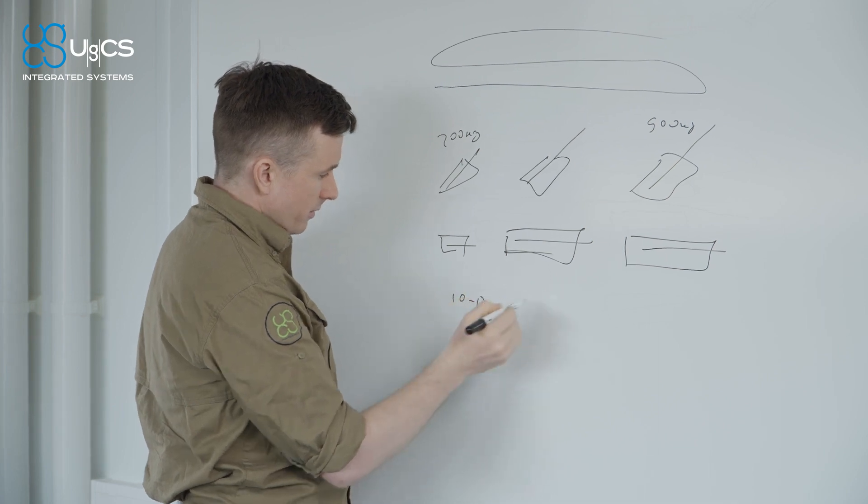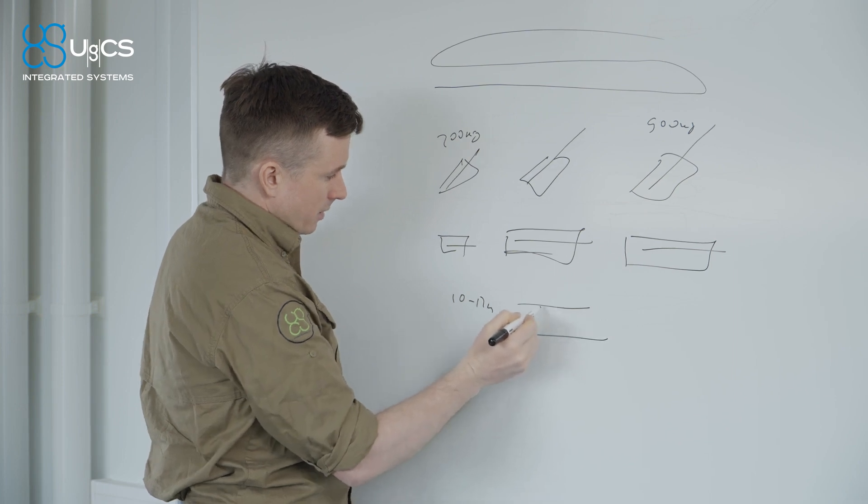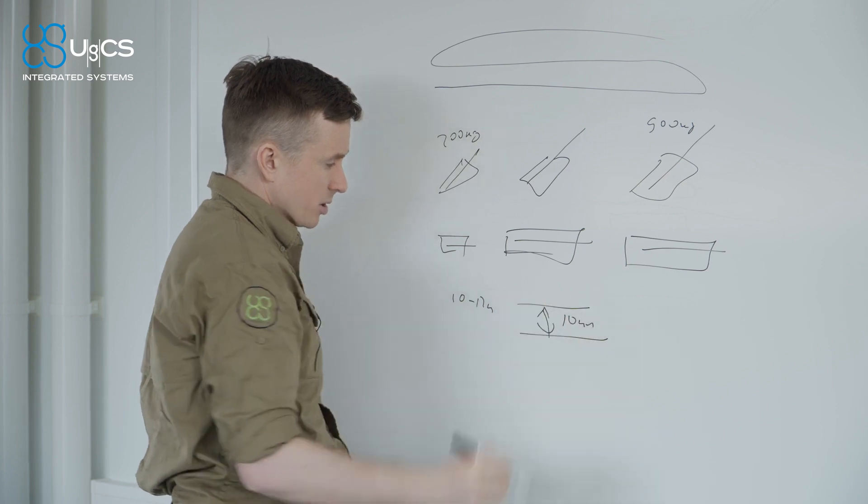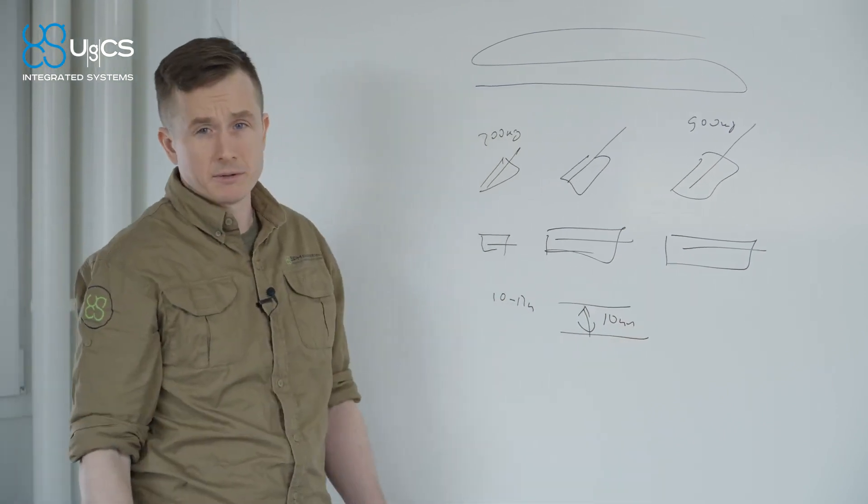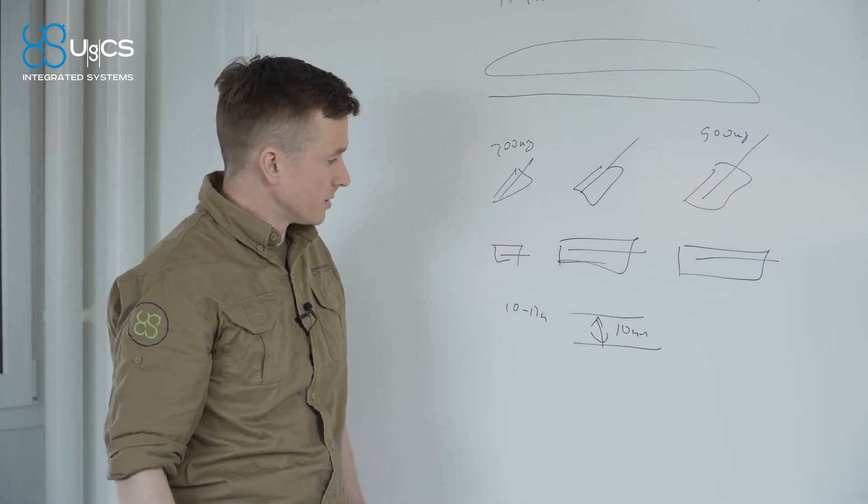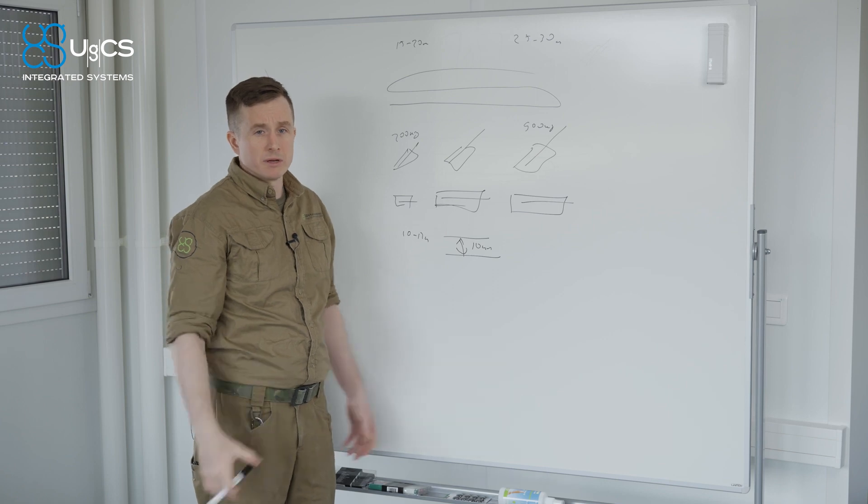We still saw the readings from the smallest engine around 10 to 12 meters, so if we want to be really sure that we detect everything in the area, we can make survey lines with 10 meters between them and be sure that we have covered all the area. So those are preliminary findings from today's experiment. More details will follow in the written report.